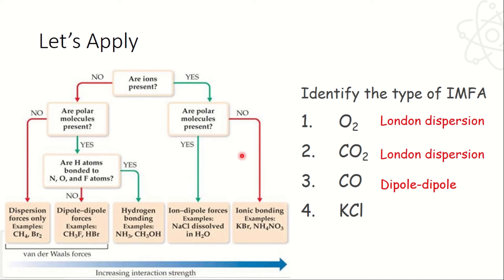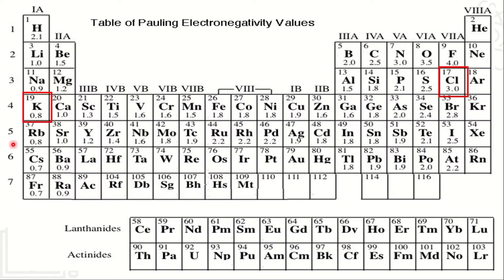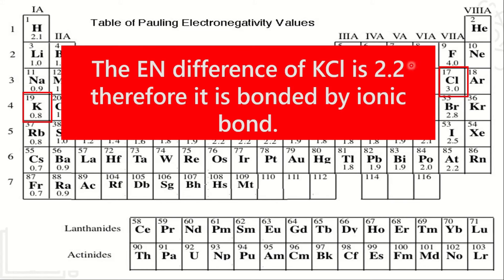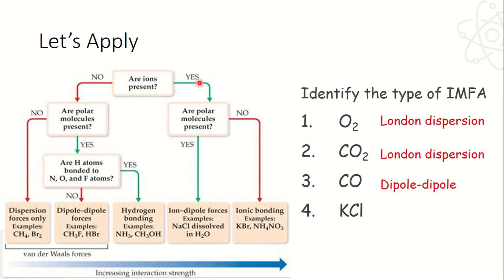Next, KCL — potassium chloride. Punta ka ng periodic table: electronegativity ng potassium K, 0.8; ang CL, 3.0. Pag mininus natin yung dalawa, the difference is 2.2. Kung meron tayong difference ng electronegativity na 2.2, meron tayong ionic bond — kasi 2.0 pataas, ionic bond na yun. Balikan ng flowchart: may ion ba? Yes, meron. May polar molecule ba? Wala — ion lang yung meron, yung potassium and chlorine. So therefore, the bonding is ionic bonding. Ang KCL natin is under ng ionic bonding.